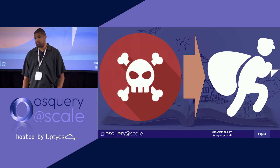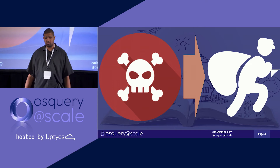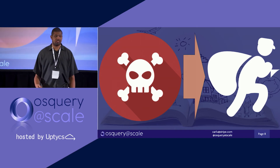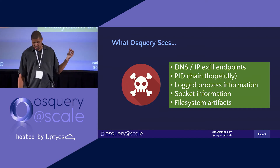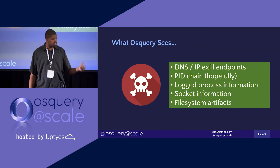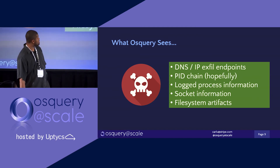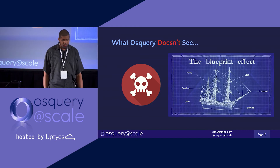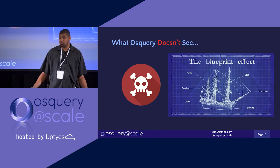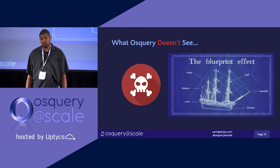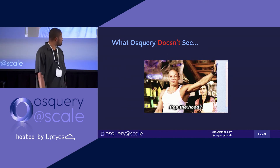There's fileless persistence as well — you're not going to see it, even if you're writing rules and doing your OS Query management, compliance, and all that. This is more or less what OS Query is going to see. But the trick is what it doesn't see — we don't actually know how this malware works. So how do we pop the hood on that?